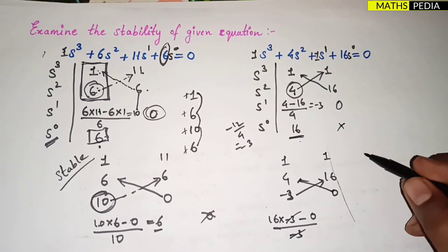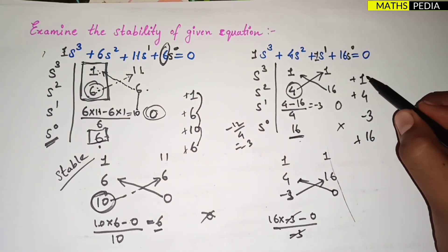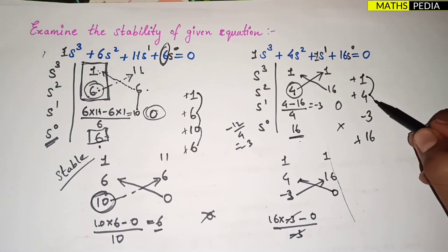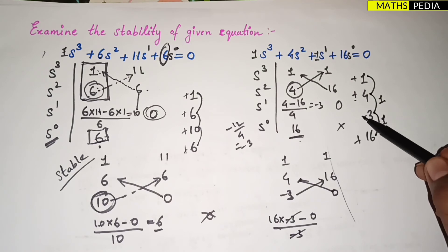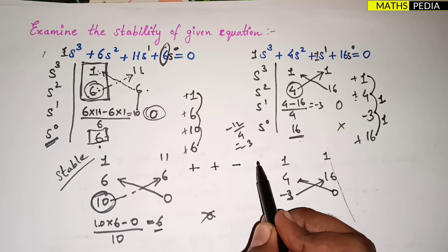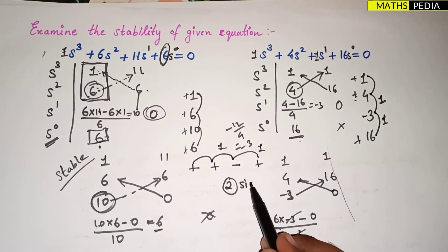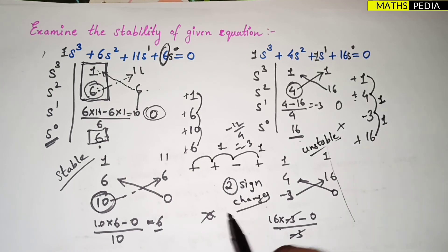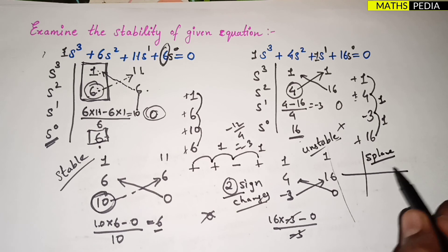Looking at the first column: 1, 4, −3, 16 — positive, positive, negative, positive. From positive to negative is one sign change, then from negative to positive is another sign change. There are two sign changes in total, so the system is unstable, and the number of roots in the right half of the s-plane is two.